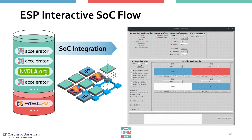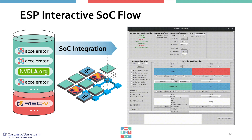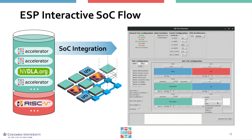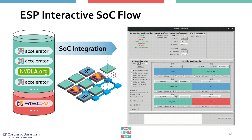The ESP graphical user interface guides developers through an interactive system-on-chip design flow that allows choosing the size of the tile matrix and the corresponding network-on-chip mesh configuration, the mix of components in the tiles, the desired Pareto-optimal design point from the high-level synthesis flows for each accelerator, and the desired processor core among those available in the library.